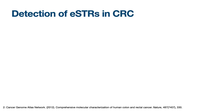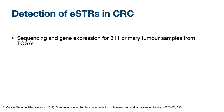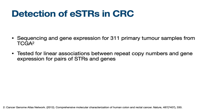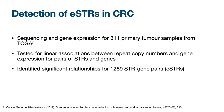We set out to investigate this, with our main aim being to identify expression STRs in colorectal cancer. We performed our analysis on sequencing and gene expression data for colorectal cancer tumors taken from the Cancer Genome Atlas. We looked for linear associations between STR copy numbers and gene expression for many STR-gene pairs, and for 1289 of these pairs we found a significant association — so these are our ESTRs.